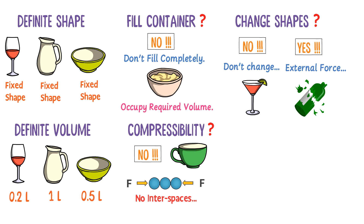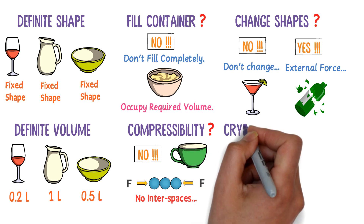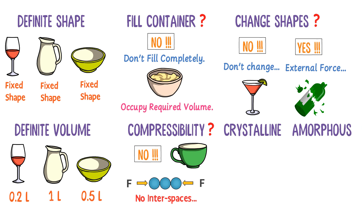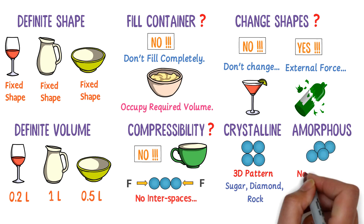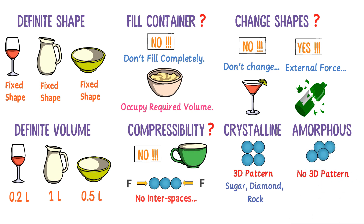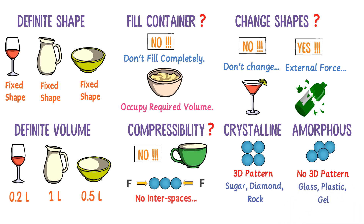Also remember that there are two main types of solids: crystalline solids and amorphous solids. In crystalline solids, particles are packed together in a three-dimensional regular pattern — for example, sugar, diamond, and rock are crystalline solids. Examples of amorphous solids include glass, plastic, and gel.